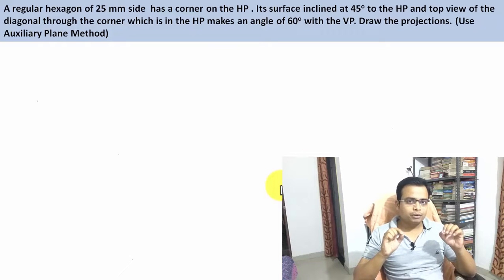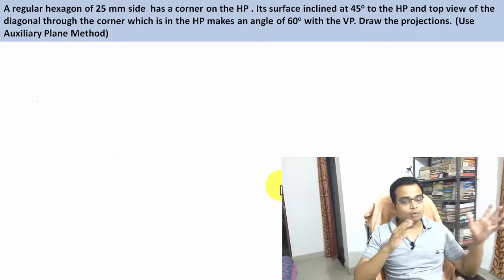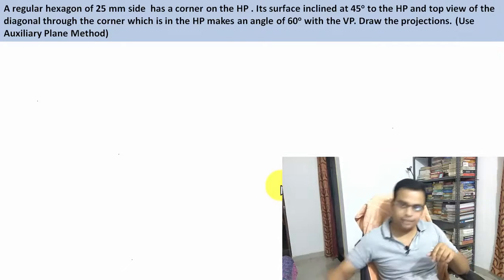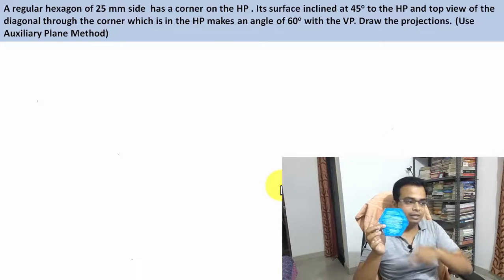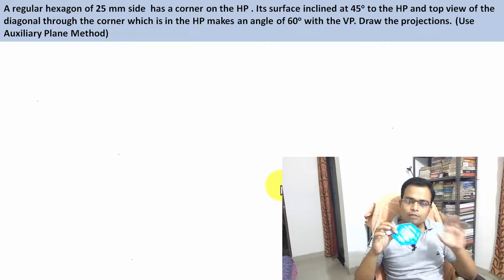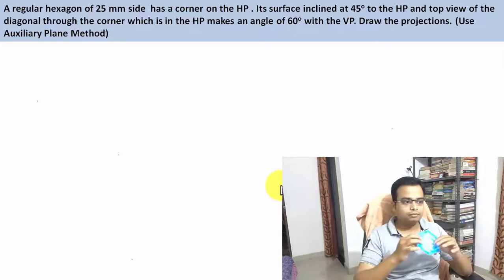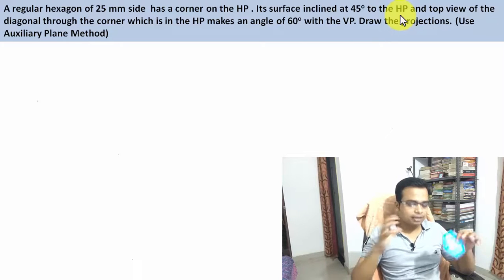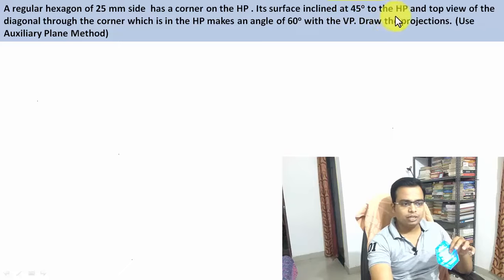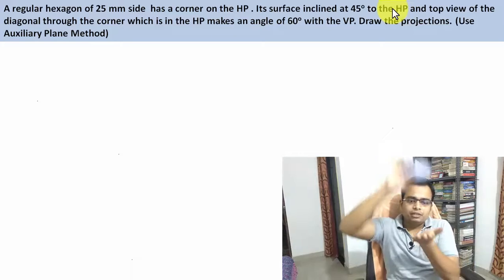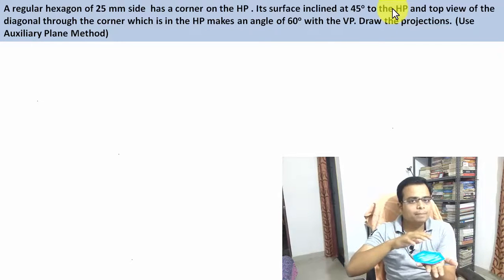Let's kick off today's session. I suggest all of you pause the video right now to extract all the details from the problem. It's a regular hexagon with all sides 25 millimeters, and it has a corner on the HP. Out of all six corners, one remains in contact with the horizontal plane. The surface is inclined at 45 degrees to the HP.